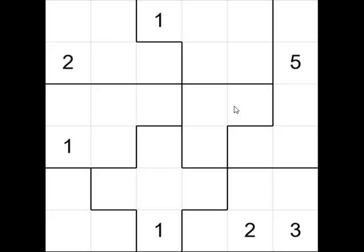The rules are simple. A group of 3 cells will contain the numbers 1 to 3. Likewise, a group of 5 cells will contain the numbers 1 to 5. The only other rule is that two adjacent cells, including ones diagonal to each other, cannot contain the same number. That's it — very simple. But some puzzles can be a real challenge to solve.